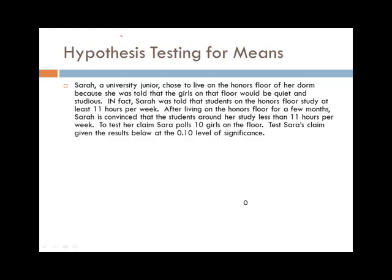Let's look at the next one. Sarah, who is a university junior, chose to live on the honors floor of her dorm because she was told that the girls on that floor would be quiet and studious. In fact, Sarah was told the students on the honors floor study at least 11 hours per week. After living on the honors floor for a few months, she's convinced that the students around her study less than 11 hours, so that's the alternative that she is creating. And the null hypothesis is that it's at least 11 hours. To test the claim, she polls 10 girls on the floor, and we're going to test the claim where alpha is 0.10. Here is the data that she got by polling the 10 women.